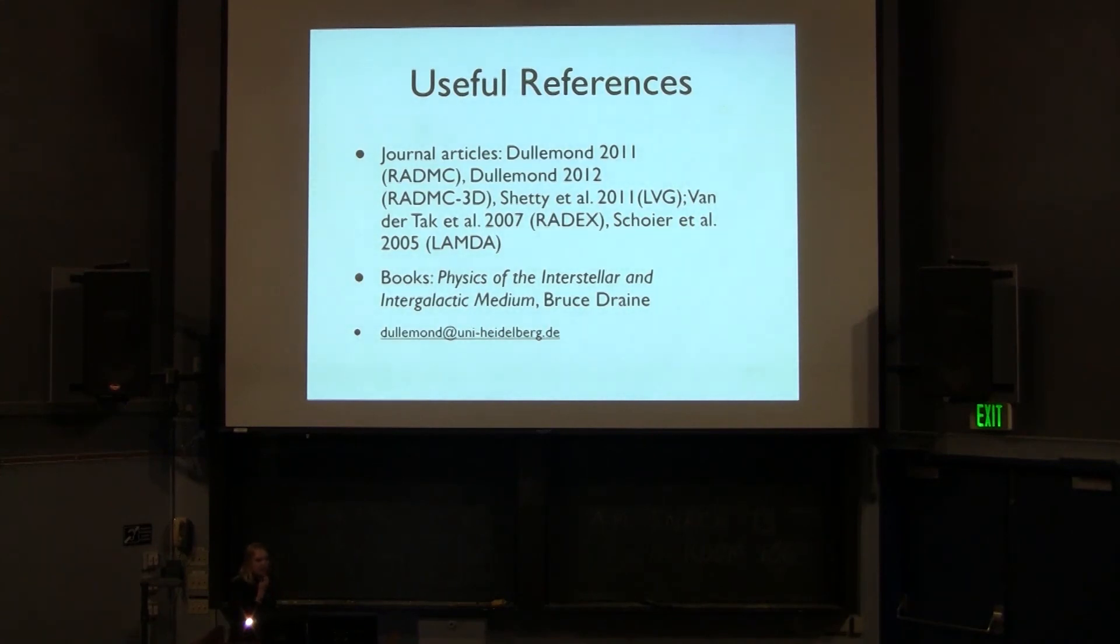So here's a set of some useful references. There's a couple by Kees that are on the 1D version and 3D versions of RADMC. The LVG, this non-LTE approach, was developed by Rahul Shetty. And so that's in a paper in 2011 if you want to read a little bit more about that. The stuff related to the molecular and atomic information, most of which is already pre-computed on this Lambda database, can be found in these two papers. Various ISM books would be extremely helpful if you want more background reading. And finally, if you have any questions about this lecture, then I direct you to email Kees about it. He's very friendly and helpful. Thank you.